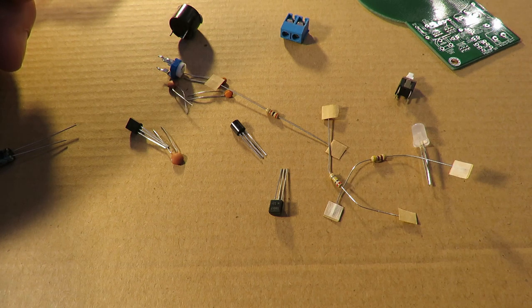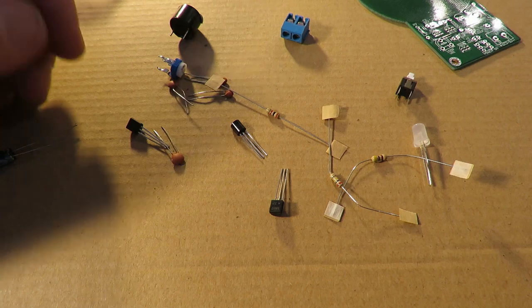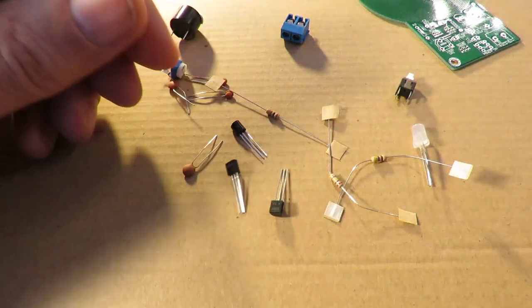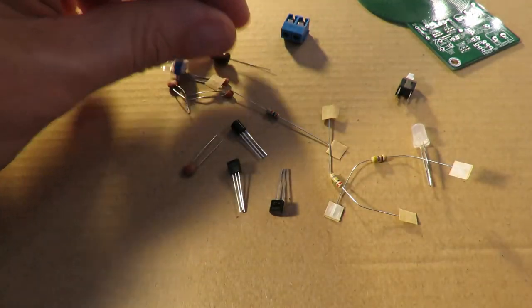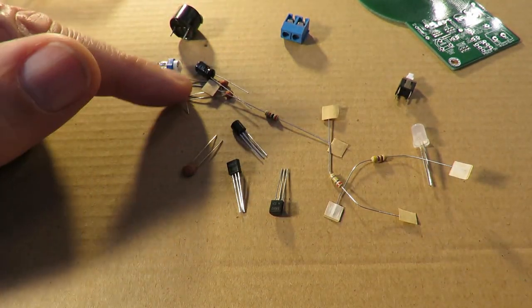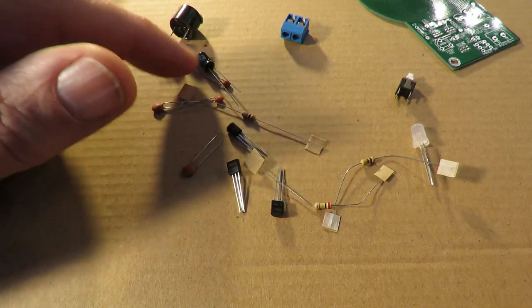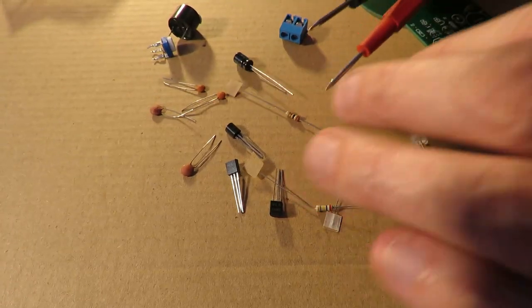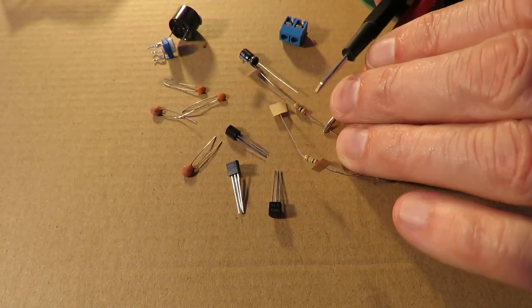Three resistors - 2K, 200K, and 470 ohms. Probably best just to check them with a meter. Transistors, electrolytic capacitor. Let me just put the meter on these resistors to check what we've actually got.